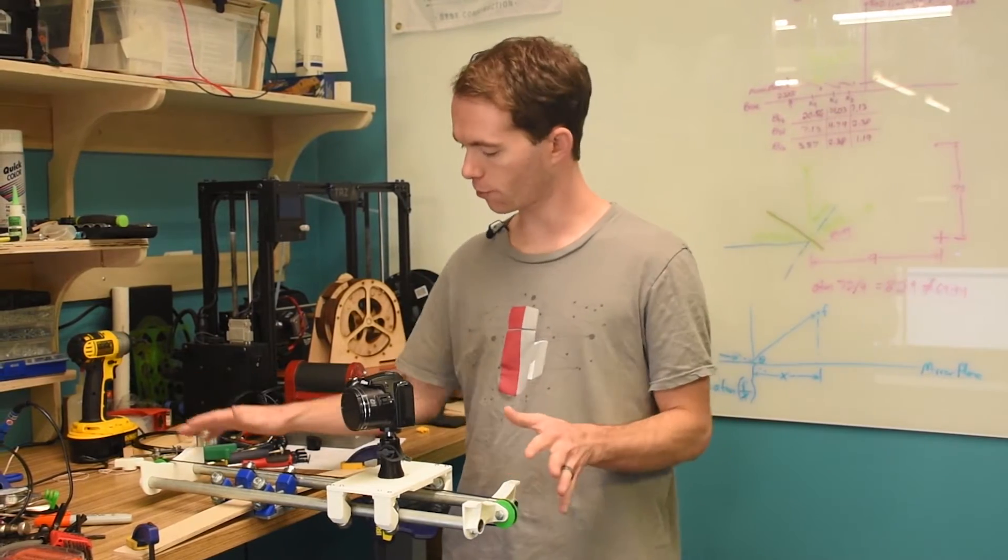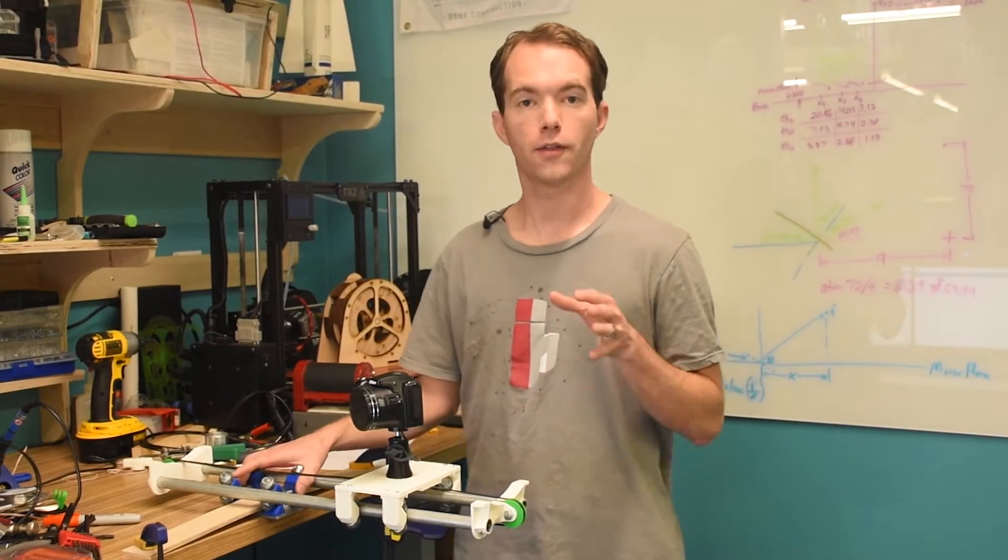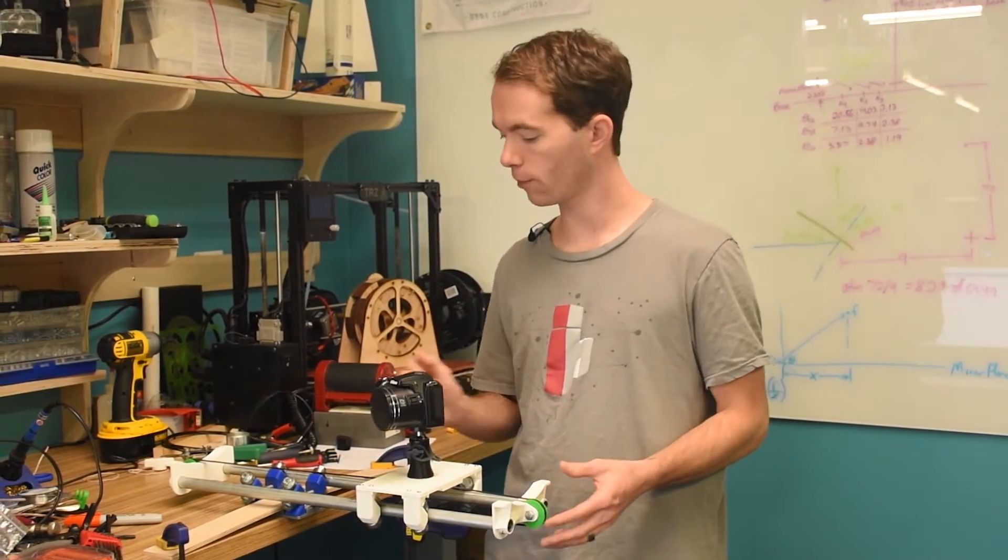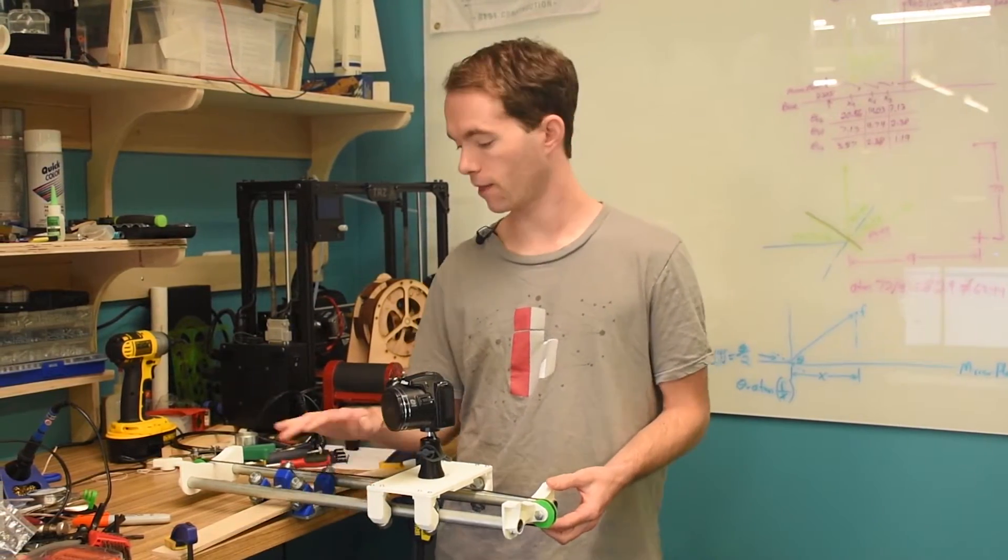So then I 3D printed all these other plastic parts to hold it all together. The only thing on here that is not 3D printed, of course, are the metal parts - the nuts and bolts and these rails and the bearings.